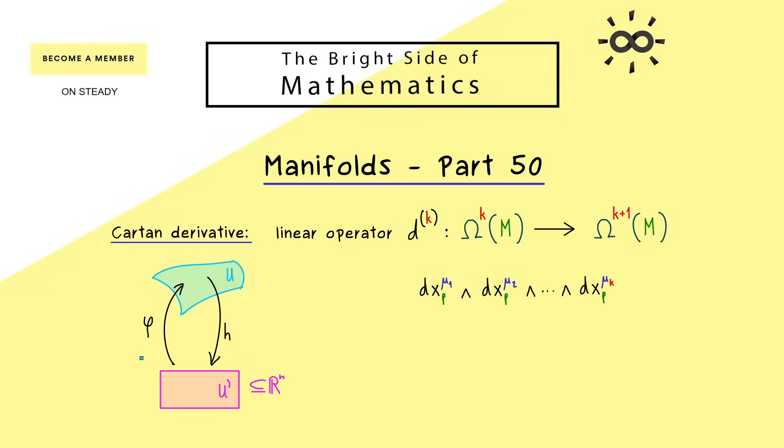This is really helpful because in the local representation, our differential form can be written as a linear combination of these terms here. Because of the linearity of the Cartan derivative, it's sufficient for us to consider just one of these terms of the linear combination. Hence here we just have a smooth component function we call f, defined on the whole chart U. So what we have here is a well-defined differential form of order k defined on U.